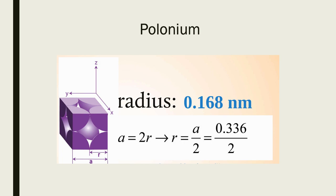For calculations, the easiest first step is finding the atomic radius of polonium given the edge length. The edge length a = 0.336 nm is provided in the CSE pub table. For simple cubic, the edge length equation is a = 2r, so solving for r: r = a/2 = 0.336/2 = 0.168 nm. This equation is specific to simple cubic — identifying the correct structure type first is critical because each structure type has its own different edge-length-to-radius equation.